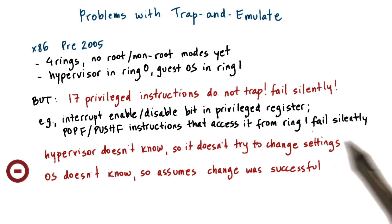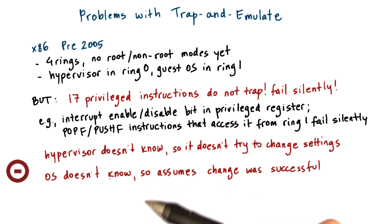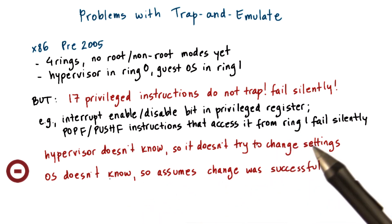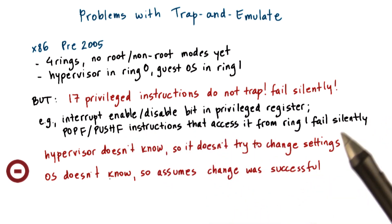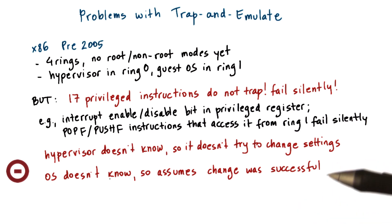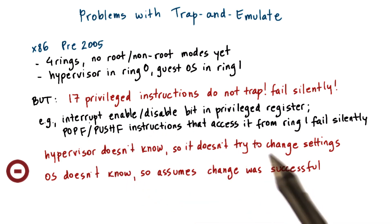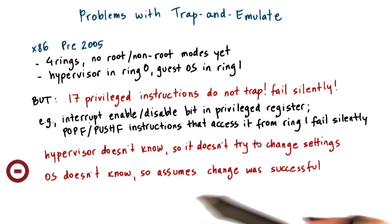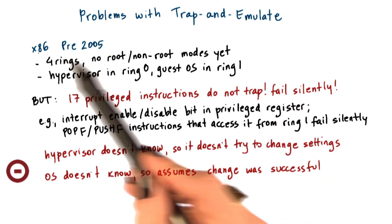At the same time, because the failure of the instruction was silent, the guest OS doesn't know that anything wrong happened, so it will continue execution assuming that interrupts were correctly enabled or disabled as intended. The OS will then perform operations that, if interrupted, can leave it in a corrupt or deadlocked state — which was intended to be avoided by disabling interrupts. So clearly this is a major problem and makes the trap and emulate approach not applicable for these architectures.